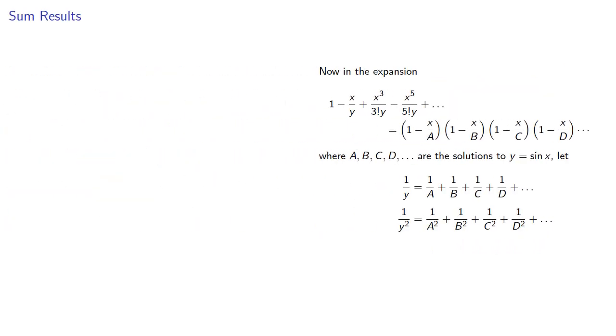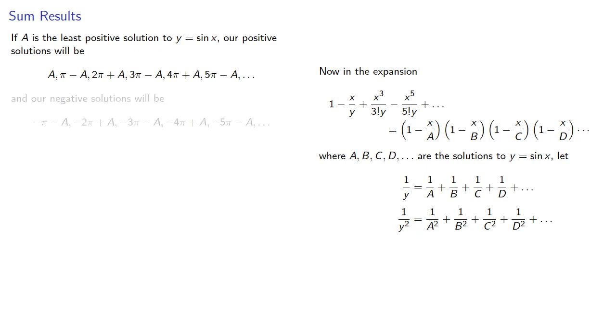So let's talk specifics. If a is the least positive solution to y equals sine x, our positive solutions will be a, 2a, 3a, and our negative solutions will be negative a, negative 2a, negative 3a. If we take p to be the reciprocals of these values, Euler's formulas give us p is equal to 1 over y.